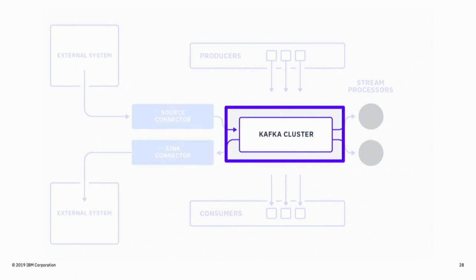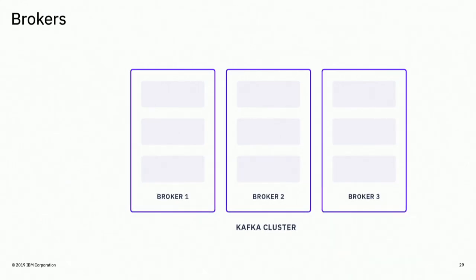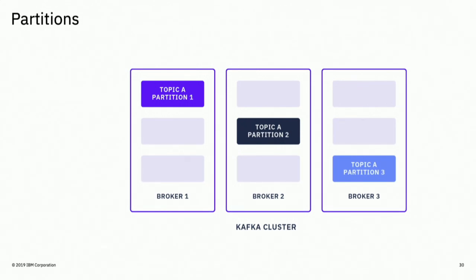Kafka is a distributed system — you can have three or more brokers, which are Kafka servers, and this is where you store your topics. A topic in Kafka is split up into partitions. You decide how many partitions you want and they get distributed across the different brokers. If you set a key in your producer, every event with the same key will go to one partition. Consumers in a group each get one partition. Ordering in Kafka is guaranteed within a partition — so if you want global ordering across all events, you choose one partition, but then you lose scalability.